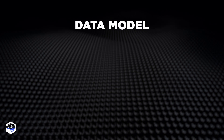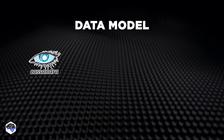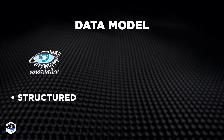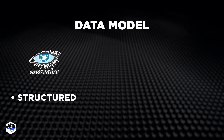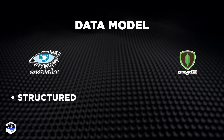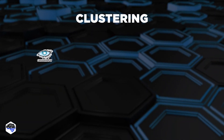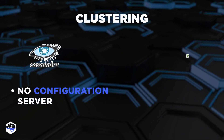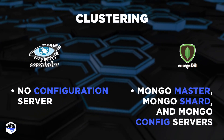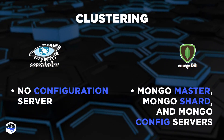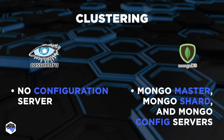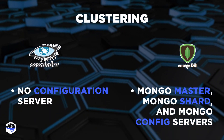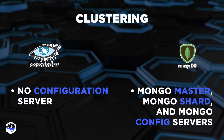Let's move on to their key differences. Data model: in Cassandra, the data model is structured similar to tables with rows and columns; in MongoDB, the data model is unstructured. Clustering: in Cassandra, there's no configuration server; in MongoDB, Mongo master, Mongo shard, and Mongo config servers participate in data replication under the management of the Mongo daemon server.